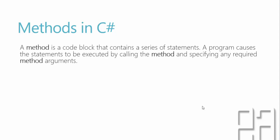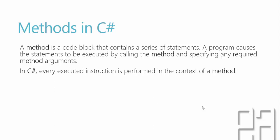Methods in C#. A method is a code block that contains a series of statements. A program causes the statements to be executed by calling the methods and specifying any required method arguments. In C#, every executed instruction is performed in the context of a method. In our previous code, we wrote every single thing as a statement within the context of a method — specifically the main method, which is the entry point for any program to be executed.